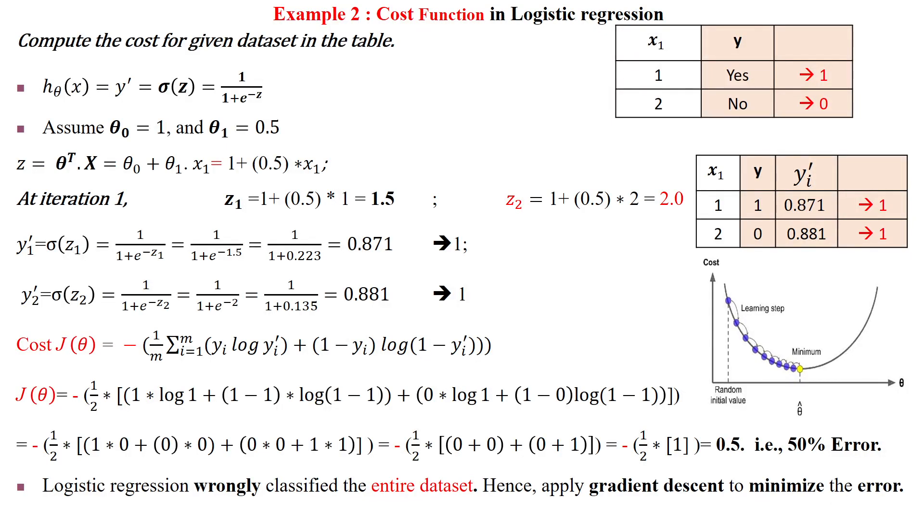Hi everyone, compute the cost function for the given dataset using logistic regression. The dataset has two samples: sample number one and sample number two.